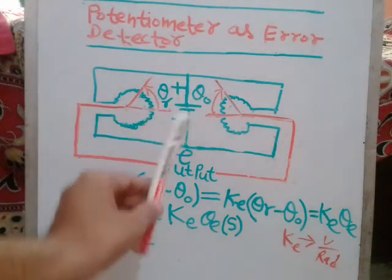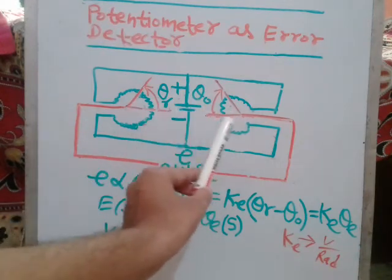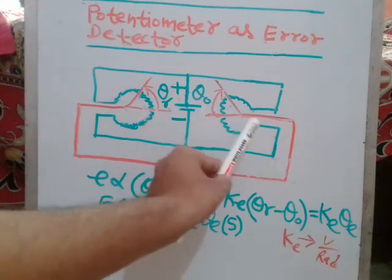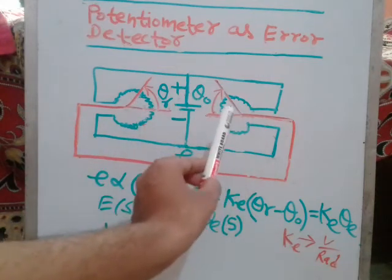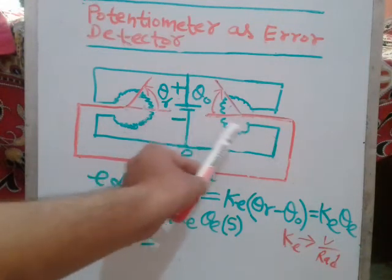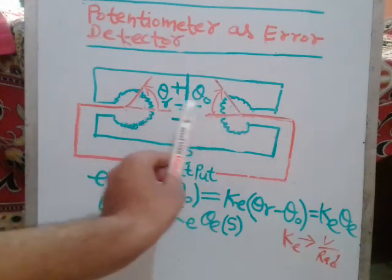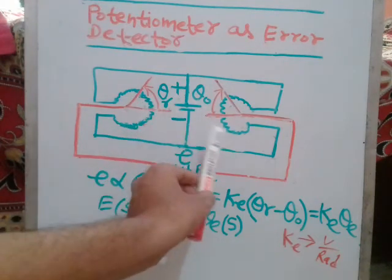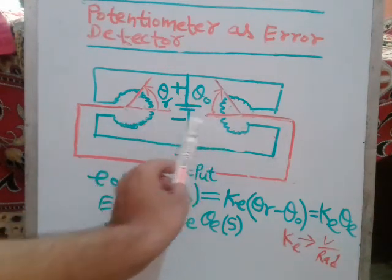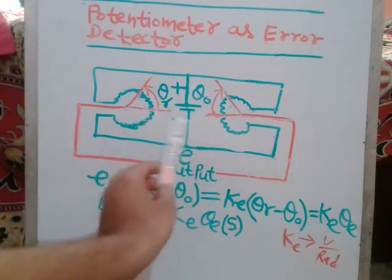When you rotate these two knobs to the same angular position, both will be at the same potential, because the angular difference between them is zero. So the potential difference in that condition will be zero across the two terminals.